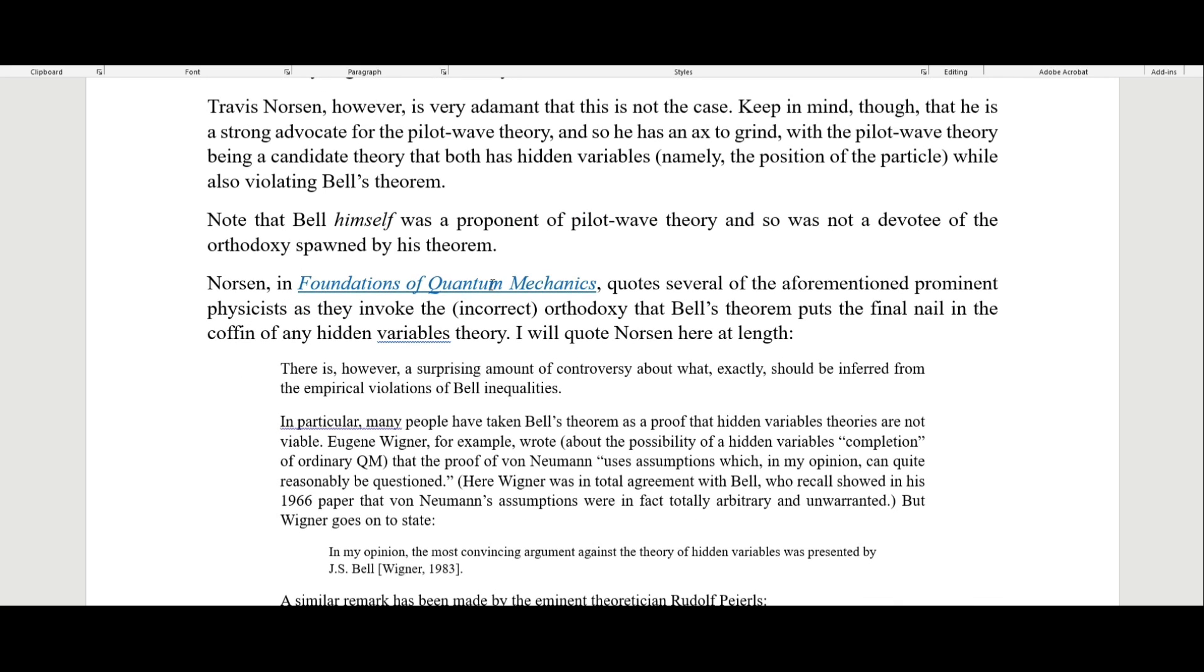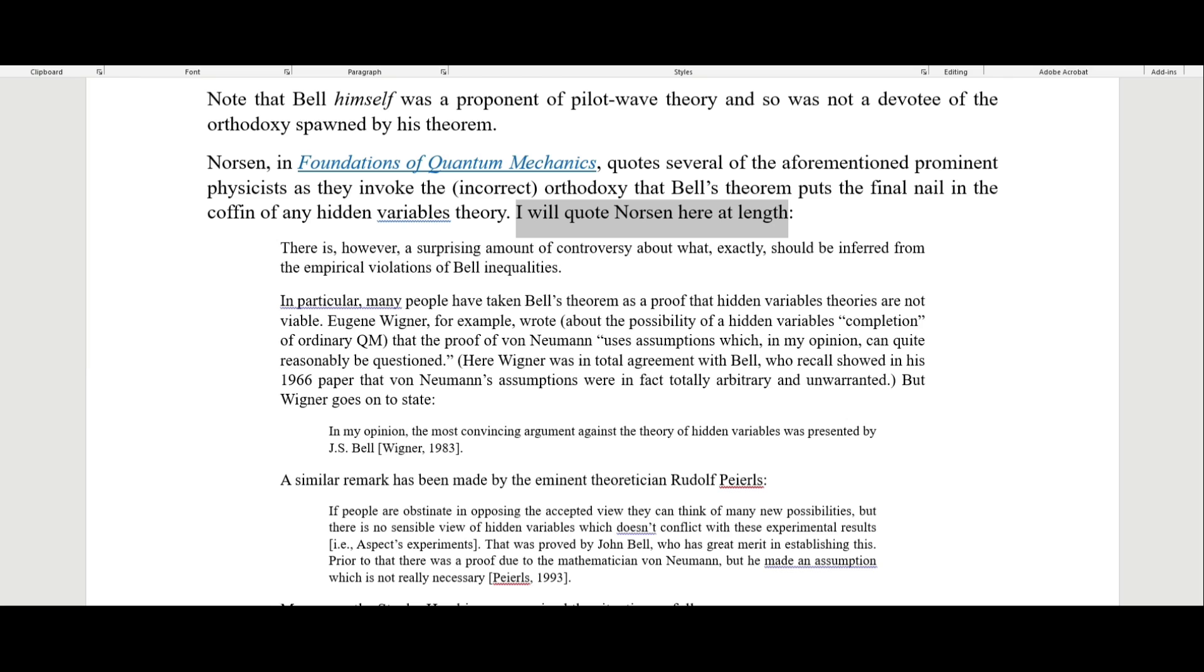Norsen, in the book Foundations of Quantum Mechanics, quotes several of the aforementioned prominent physicists as they invoke the incorrect orthodoxy that Bell's theorem puts the final nail in the coffin of any hidden variables theory. He says there is a surprising amount of controversy about what exactly should be inferred from the empirical violations of Bell inequalities. In particular, many people have taken Bell's theorem as a proof that hidden variables theories are not viable.